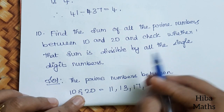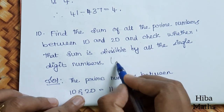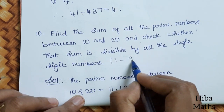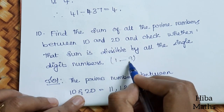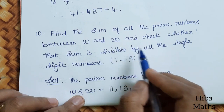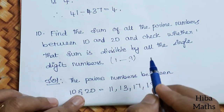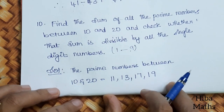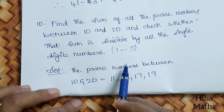Single digit numbers are 1 to 9, and we will divide by all of them. So the prime numbers between 10 and 20 are: